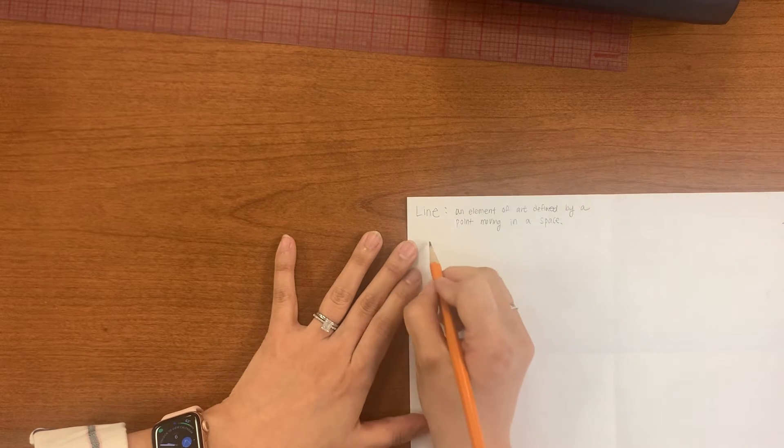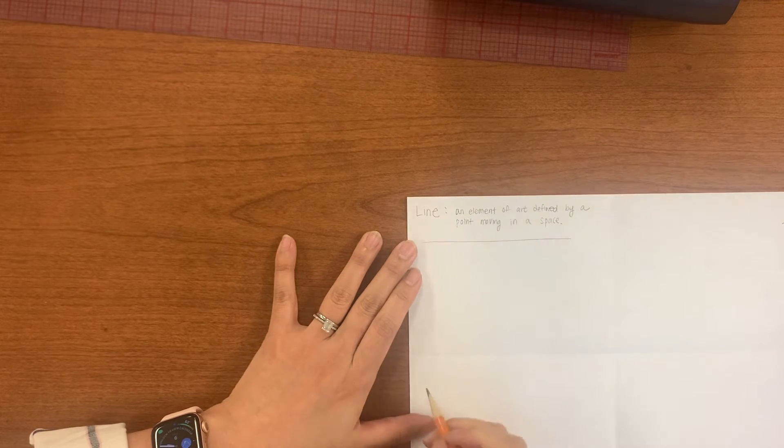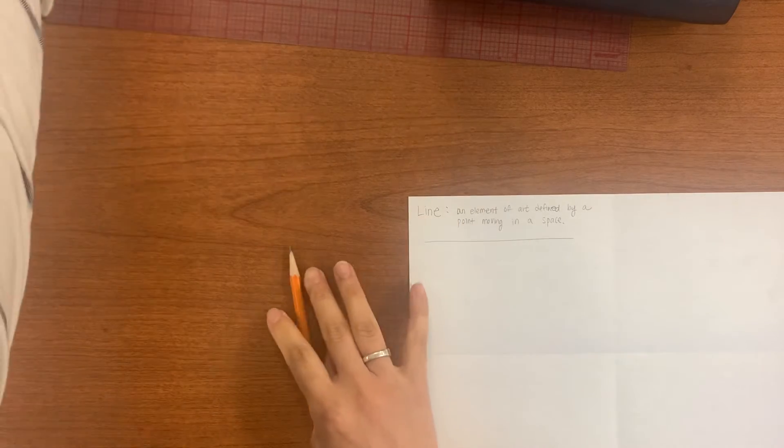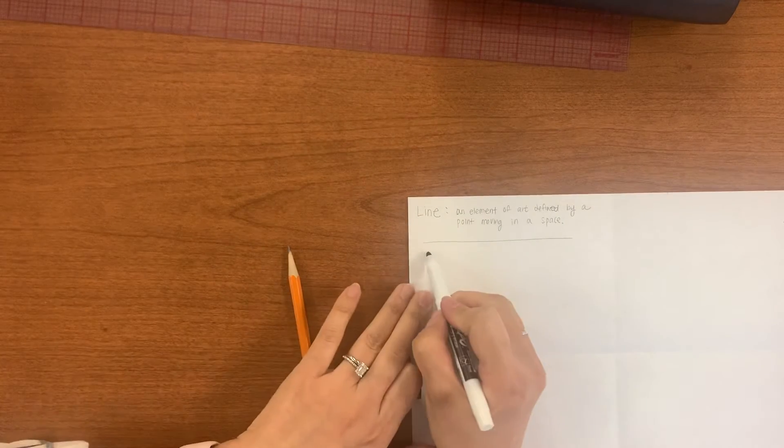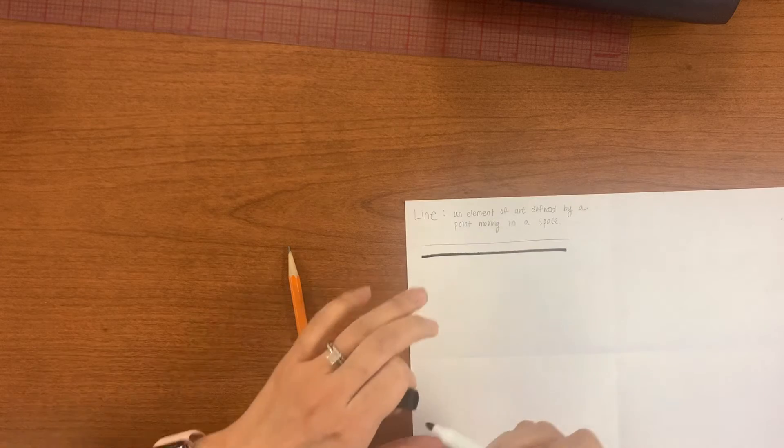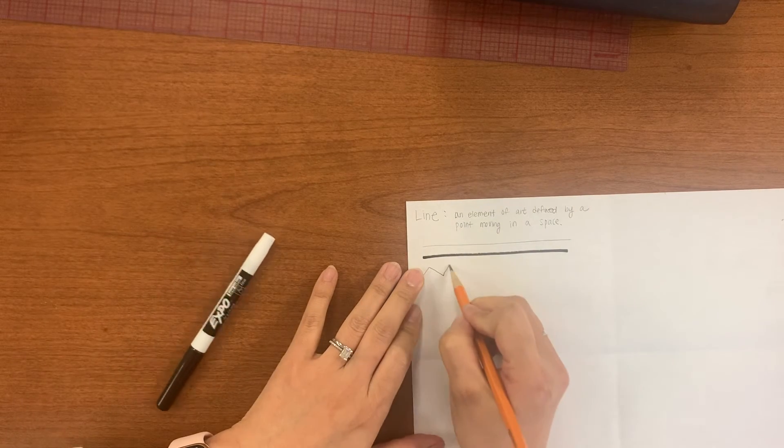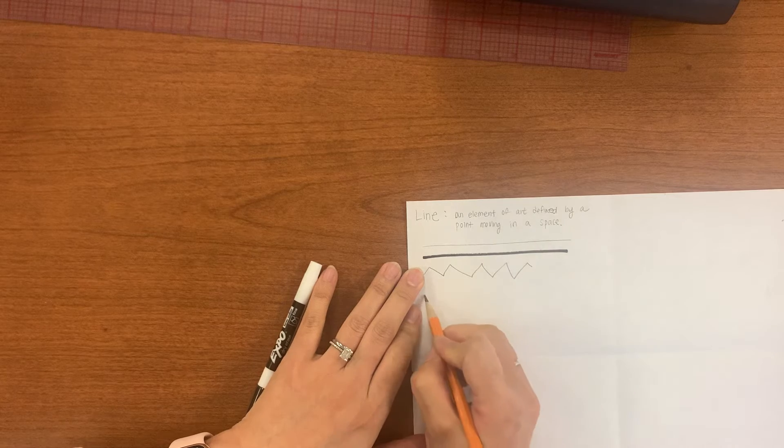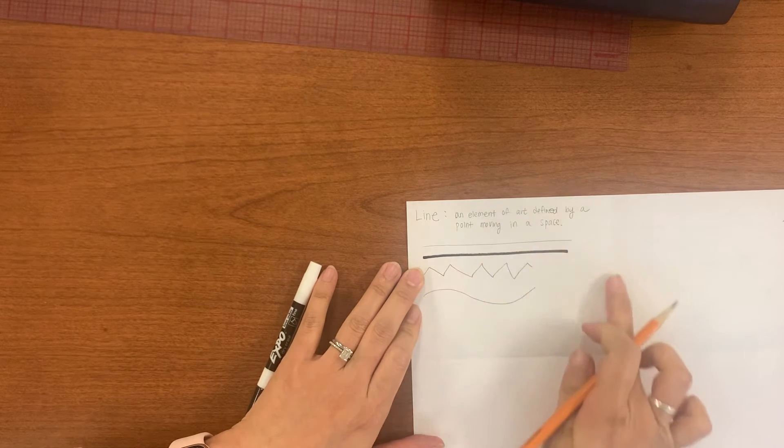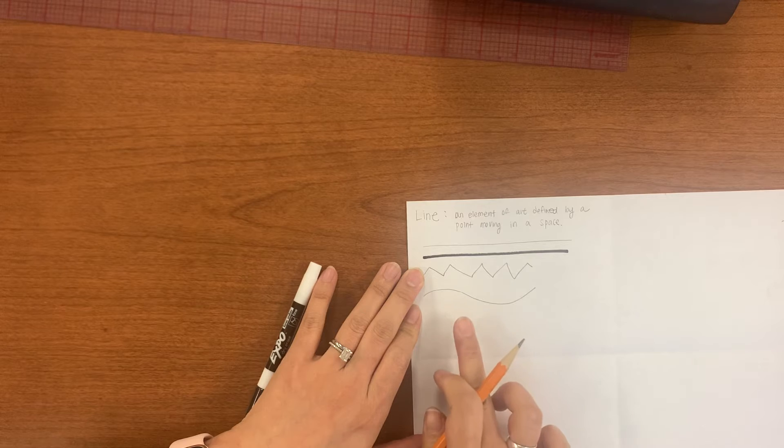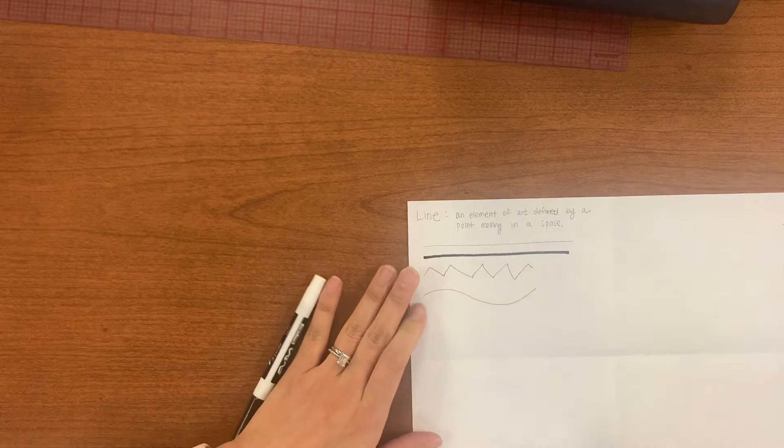This is a fancy way of saying it, but pretty much line can be long like this. It could be thick. So if you want to use a different pen, you can use that too. And you can have zigzag line like this. You can have curly line. I want to have different types of lines that you can demonstrate for me here.